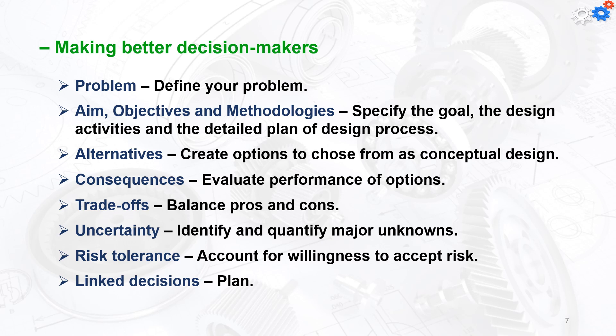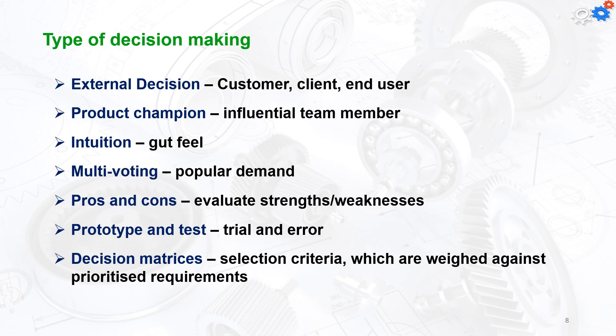The types of decision-making can be external decision which depends on the customer, client, and end user. We can have the product champion, which is an influential team member, intuition by gut feel, multi-voting by popular demand, pros and cons to evaluate strengths and weaknesses, prototype and test for trial and error, and decision matrices with selection criteria weighted against prioritized requirements.